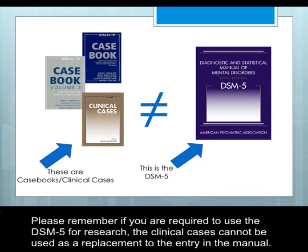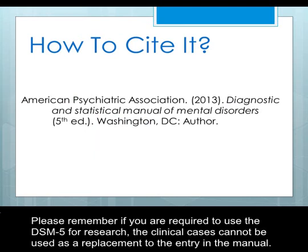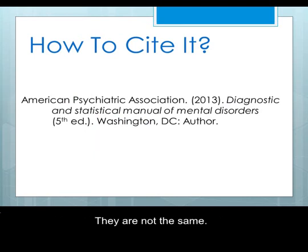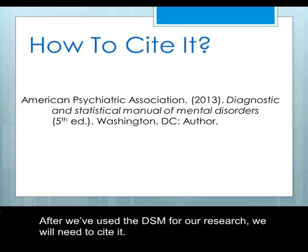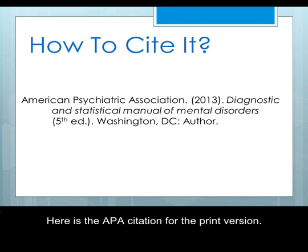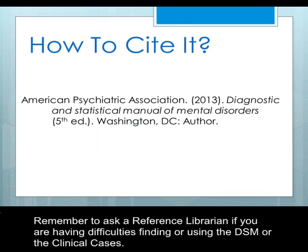Please remember, if you are required to use the DSM-5 for research, the clinical cases cannot be used as a replacement to the entry in the manual — they are not the same. After we have used the DSM for our research, we will need to cite it. Here is the APA citation for the print version. Remember to ask a reference librarian if you are having difficulties finding or using the DSM or the clinical cases.